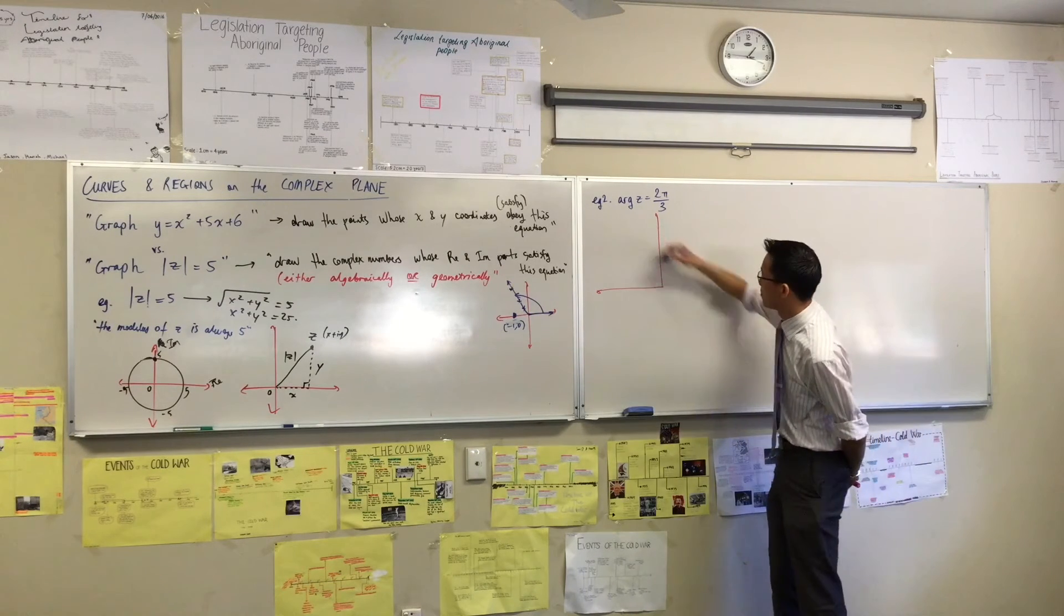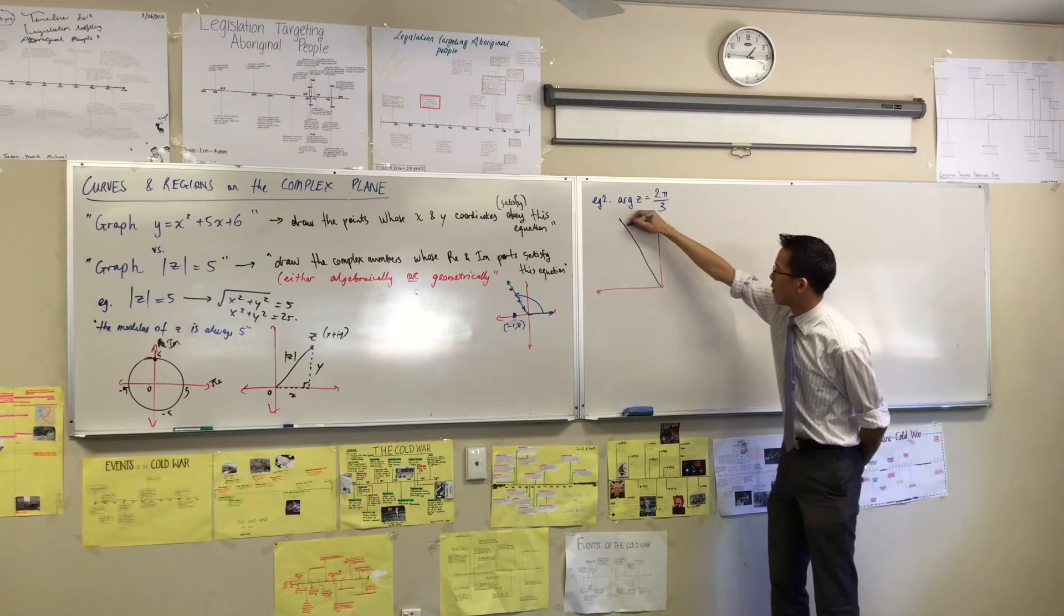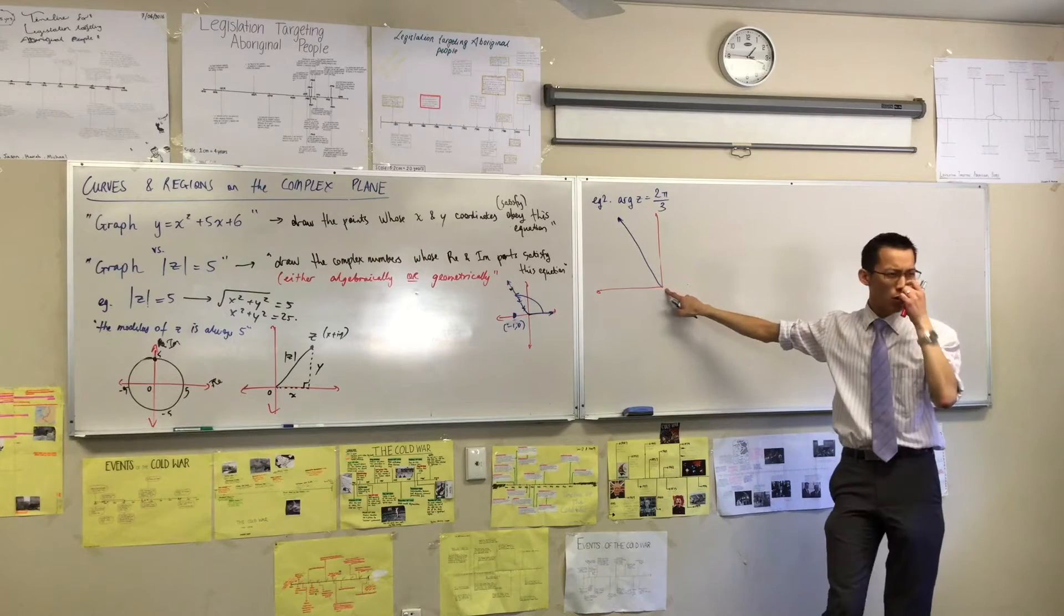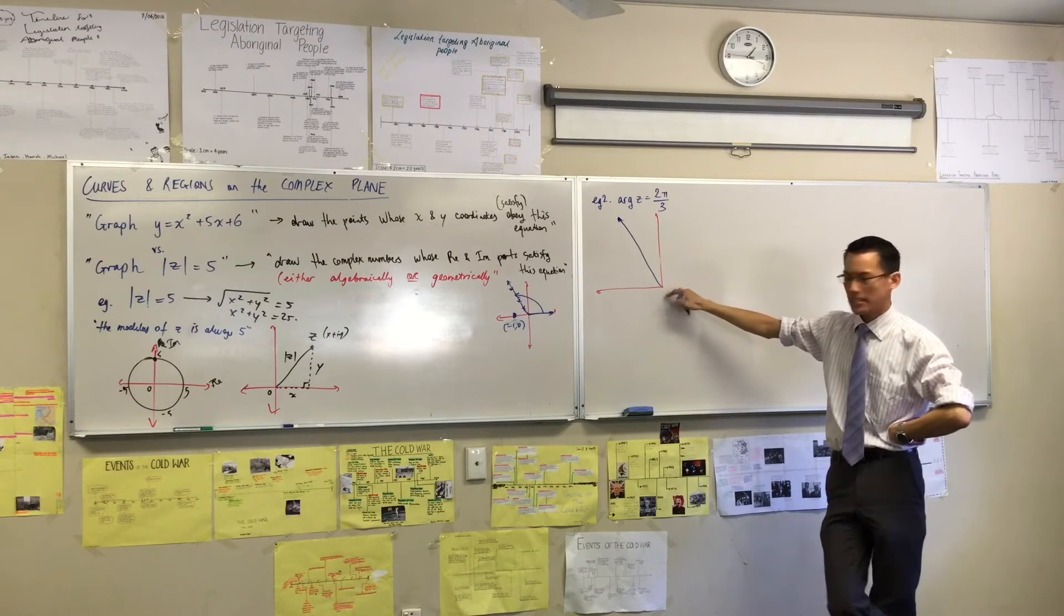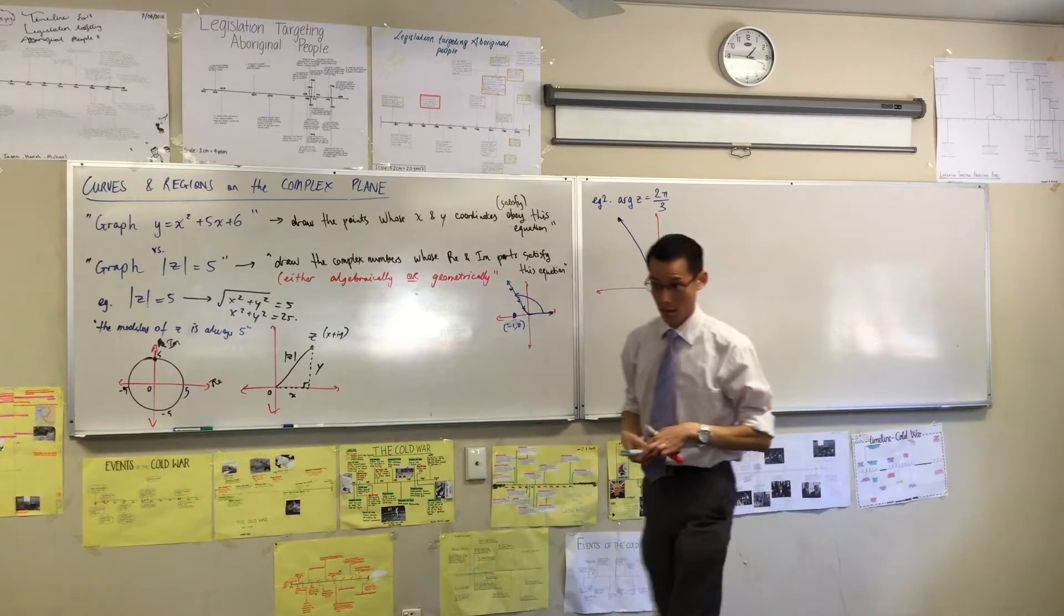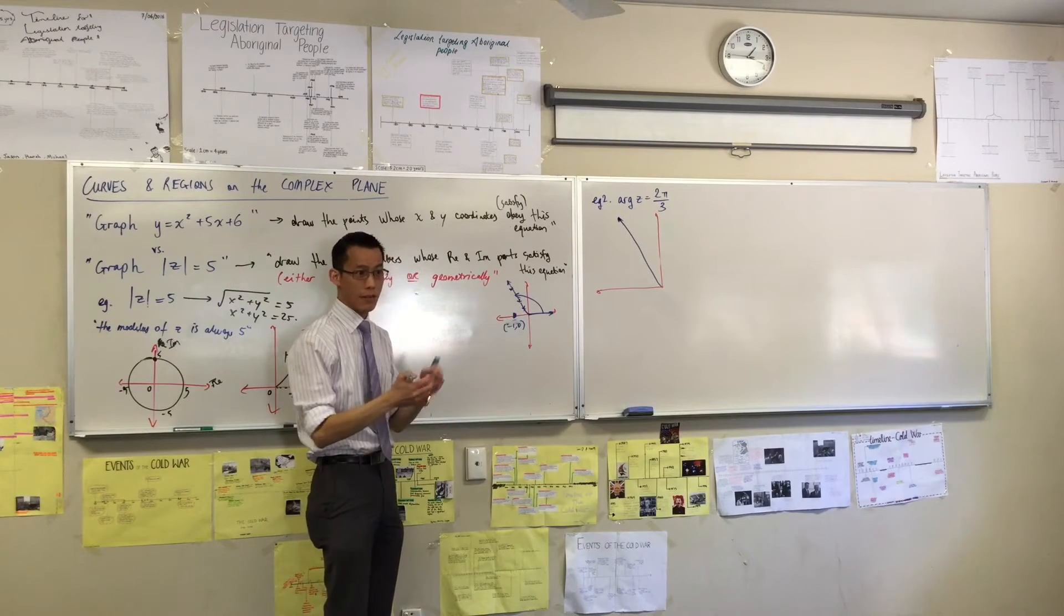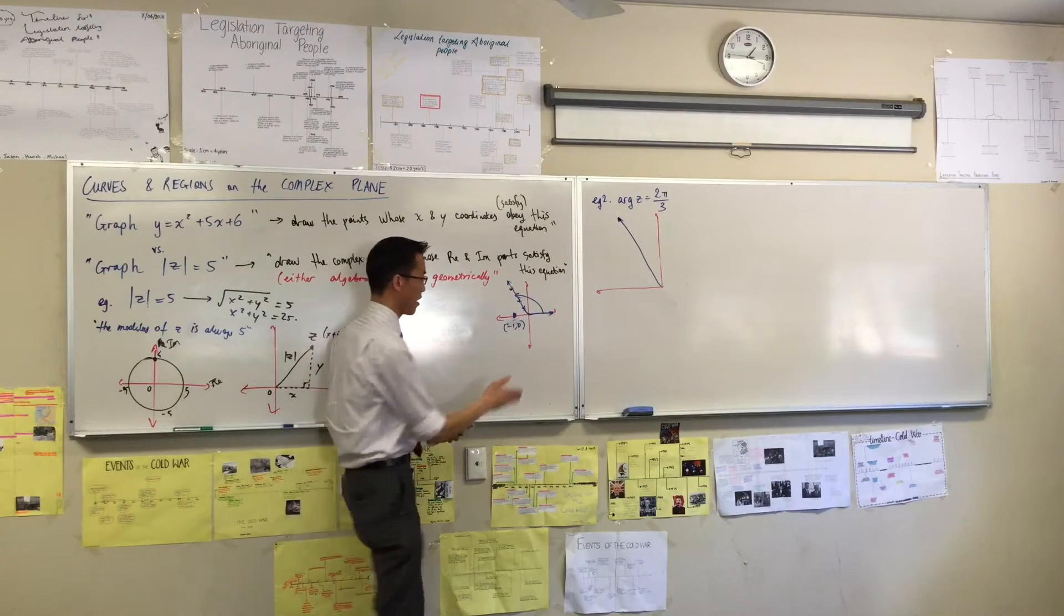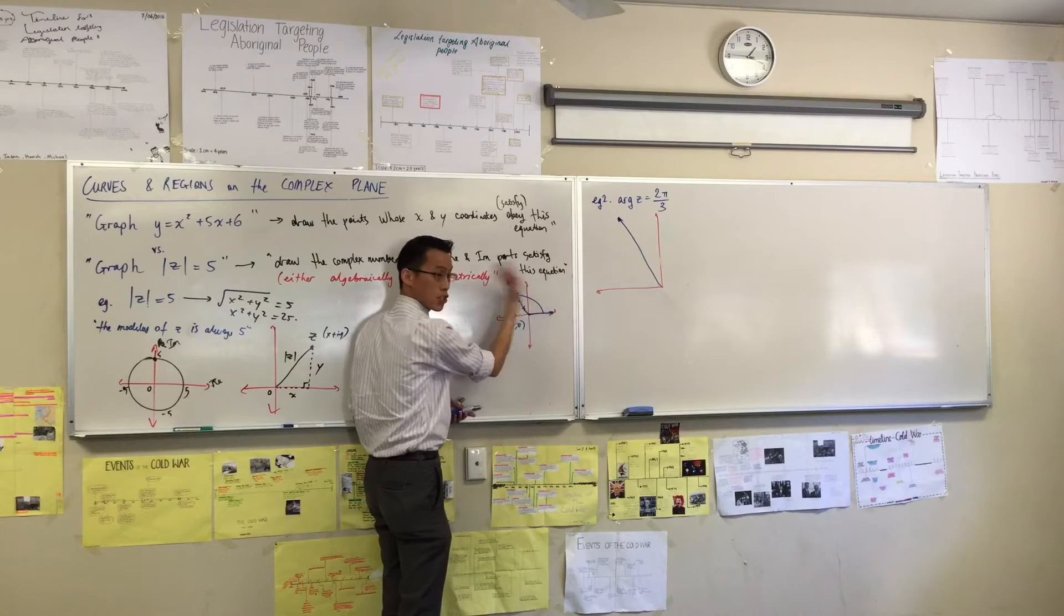Except for one. What happens here at the origin? What's your argument at the origin? Now, tell me again, what does argument mean? I drew it on the board. It's the direction you have to face in, right? Measuring from here. This is the positive real axis, that's where we begin, and then you turn.